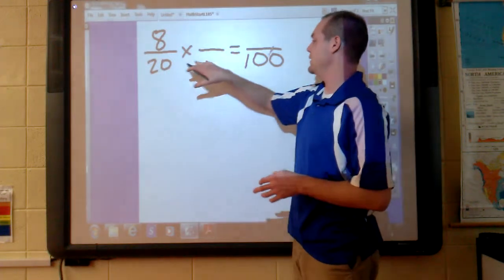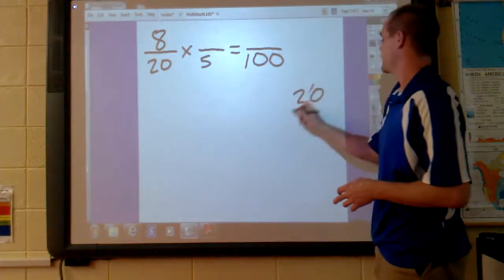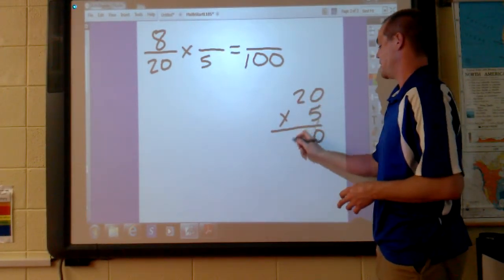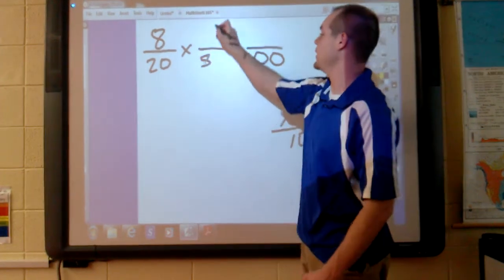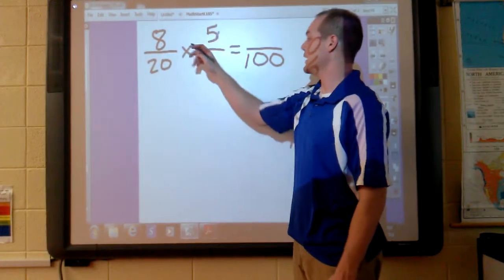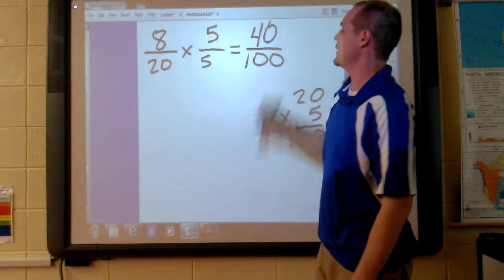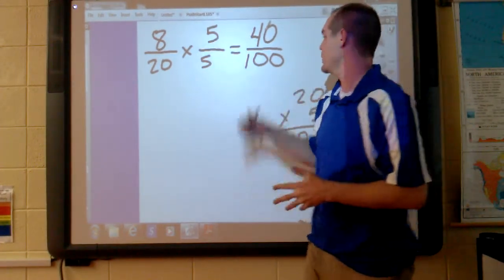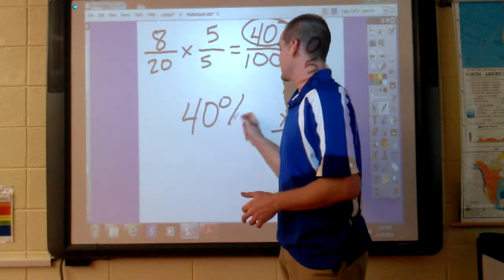We need to take 20 times what to get 100? I know that 20 times 5, 5 times 0 is 0, 5 times 2 is 10. So 20 times 5 is 100, so this fraction needs to be equal to 1, so the numerator needs to match the denominator. We can multiply 8/20 by 5/5. 8 times 5 is 40. What is 8/20 as a percentage? We know now that it is 40%. That's your answer for example number 1.